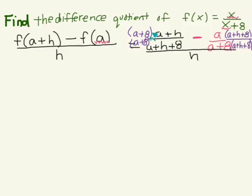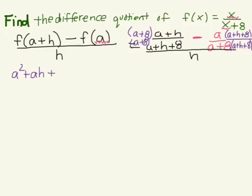On the left-hand side, we're going to use FOIL to multiply our first binomial, a plus 8, times our second binomial, a plus h. On the right-hand side, we're going to use the distributive property to multiply a times a, a times h, and a times 8. So a times a gives us a squared; our outer is a times h; our inner is 8 times a; and our last is 8h.